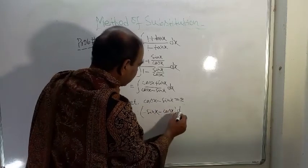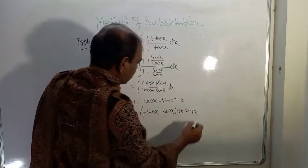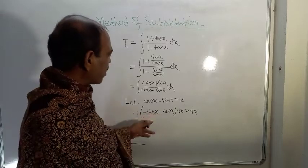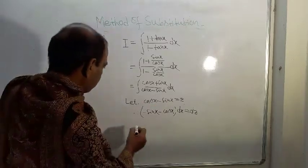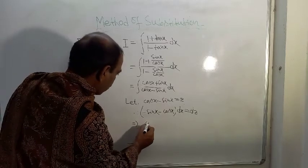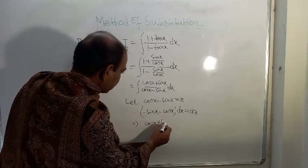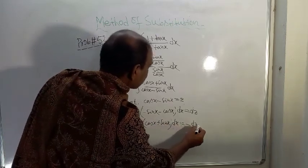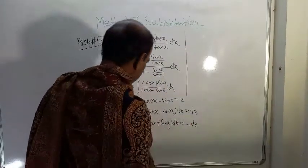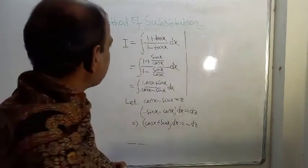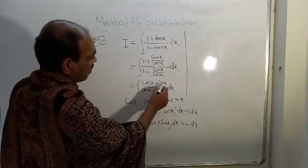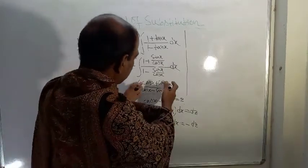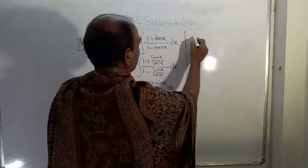So this multiplied by dx is equal to dz. Taking out the minus sign as common, we get cos x + sin x dx = -dz. We can see that cos x + sin x dx appears in the numerator, so this part will be replaced by -dz.